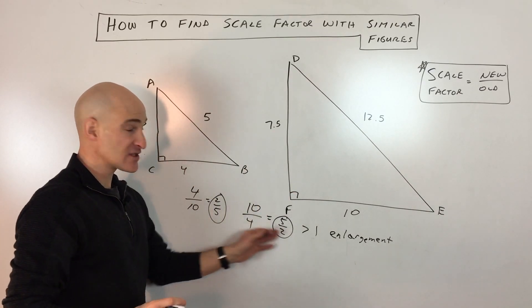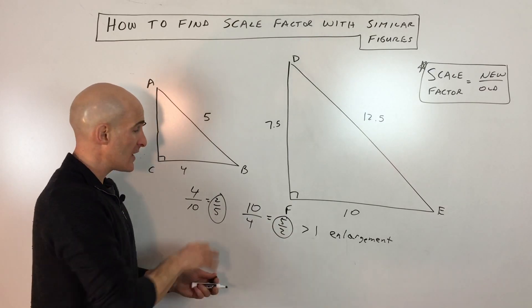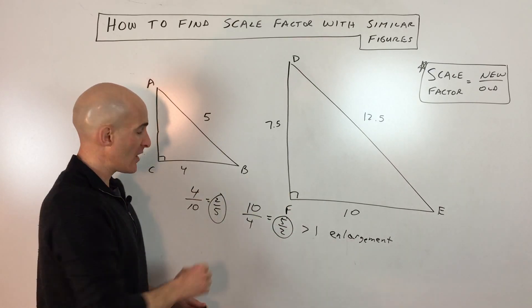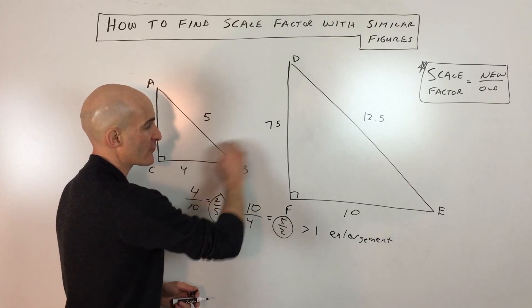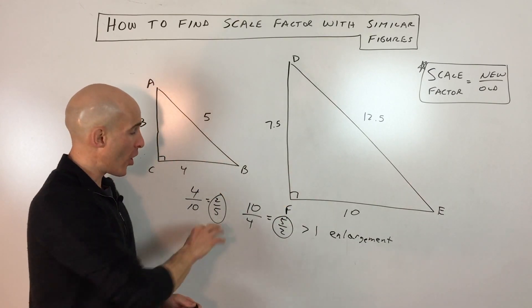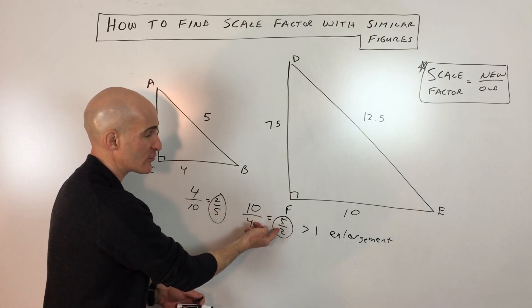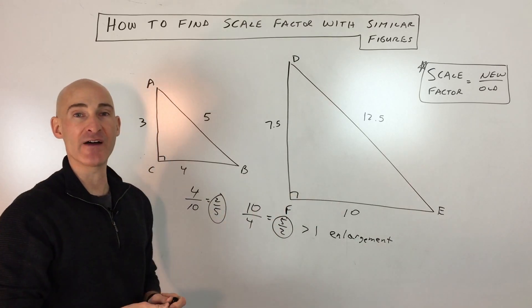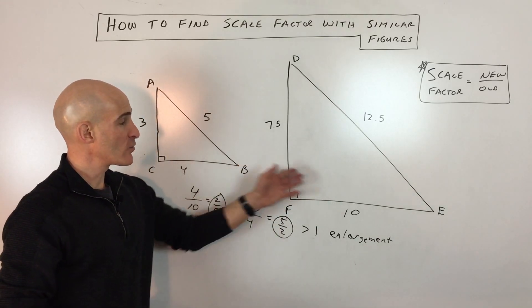But notice that these are reciprocals of each other. So even if you mix it up and you say, well, I got 2.5 but it doesn't make sense because this figure is larger, all you have to do is take the reciprocal and you realize the scale factor is 0.4. So that's how you work with scale factor. It's very simple.